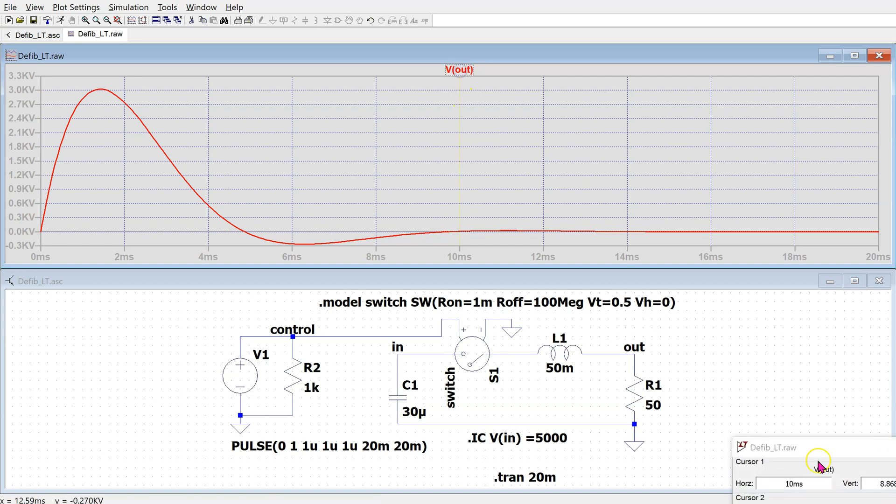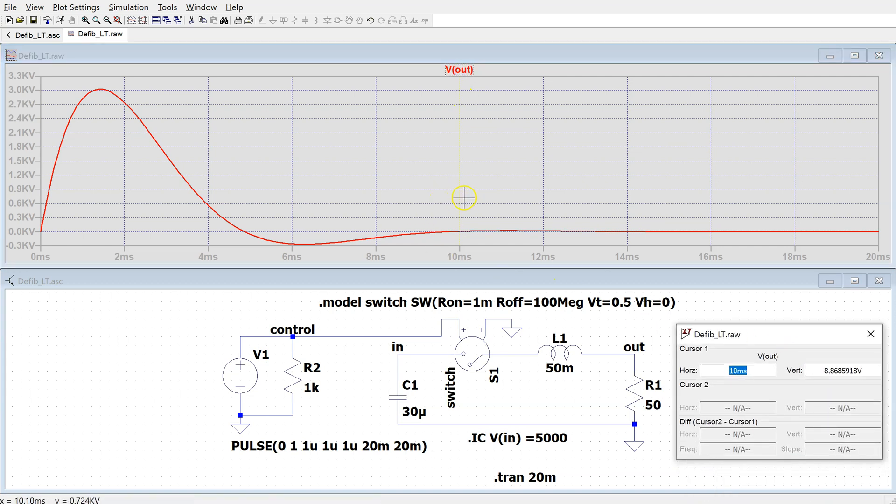We can click here to enable the cursor and then we can move the cursor to see that the peak value of the output voltage is around 3000 volts. The output voltage lasts a few milliseconds and then quickly dies to zero.